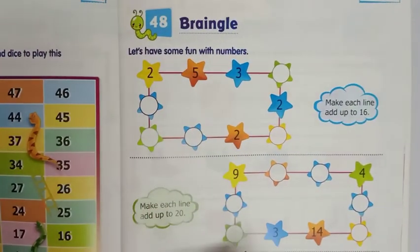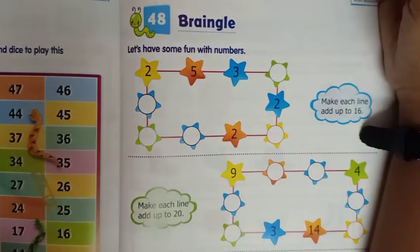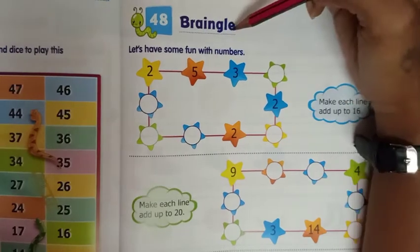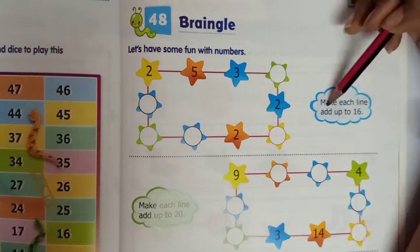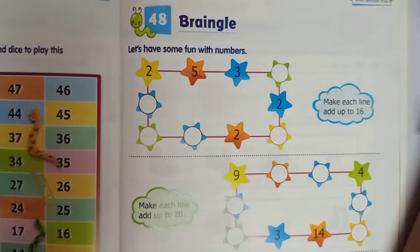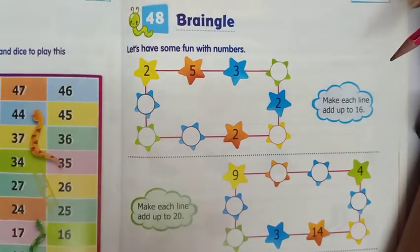Next is page number 69. That is Brain Kill. Let's have some fun with numbers. Make each line add up to 16. Each line you have to add up to 16.